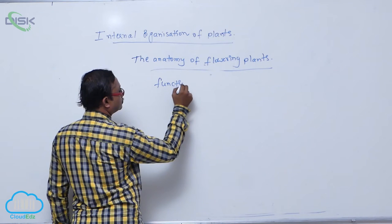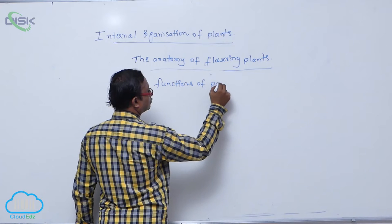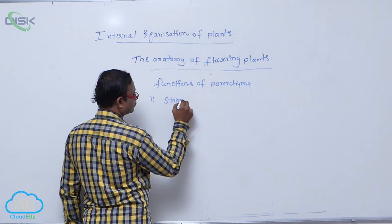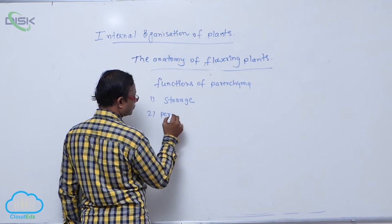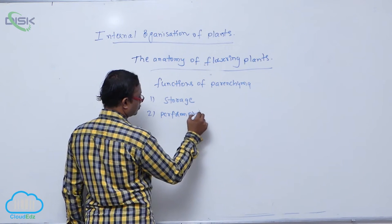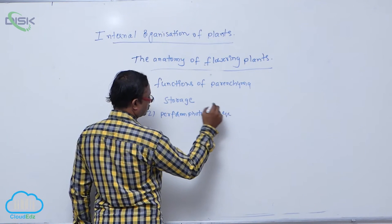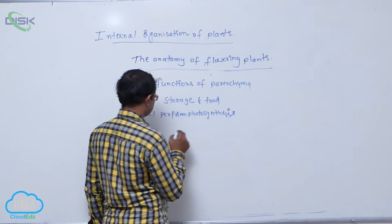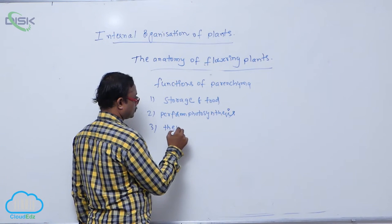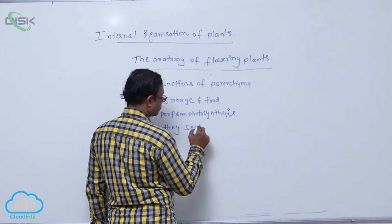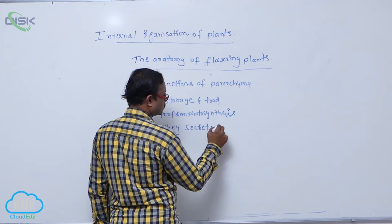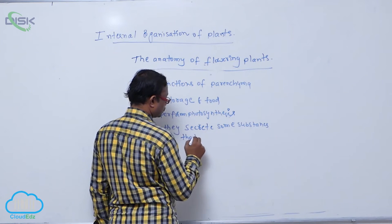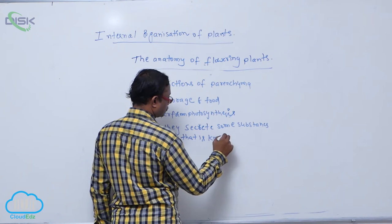Functions of parenchyma. They store food and perform photosynthesis. And the third function is that they secrete some substances, which is known as secretion.